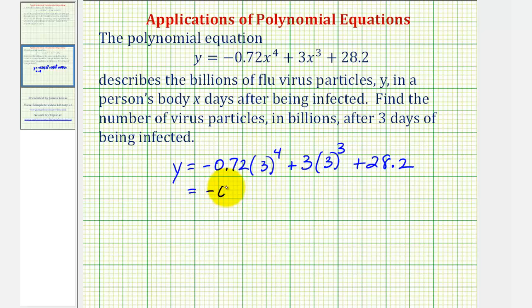So we have negative 0.72 times 81 plus three times, three to the third would be three times three times three, which is 27, and then plus 28.2.